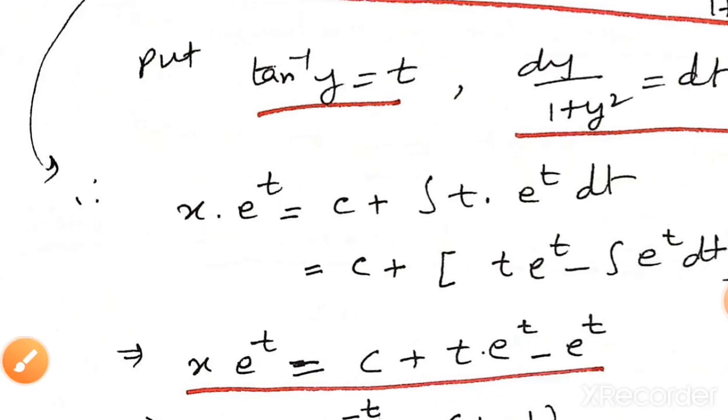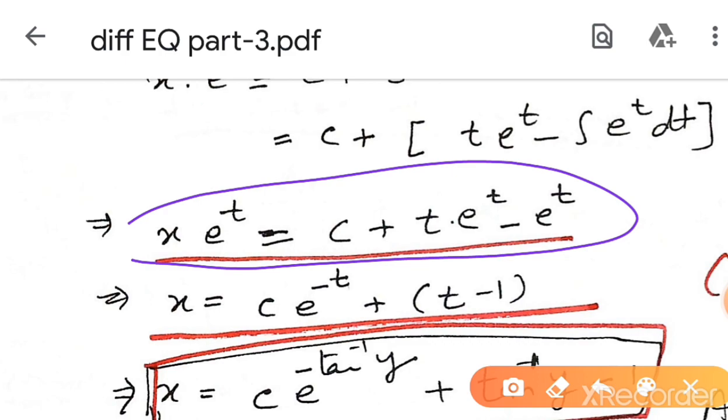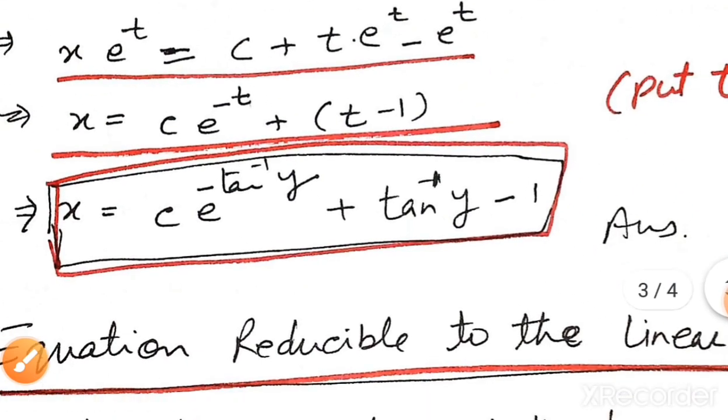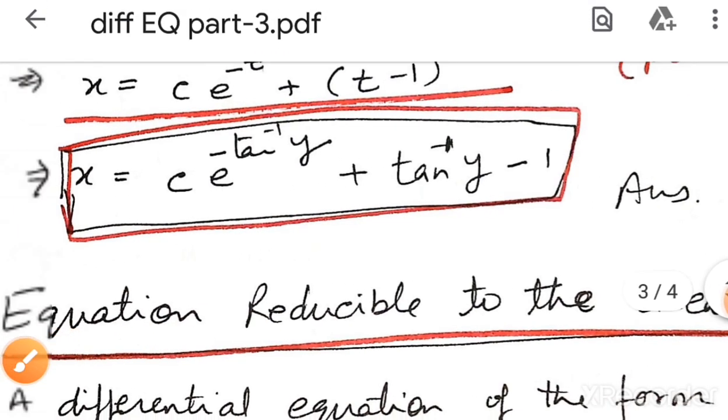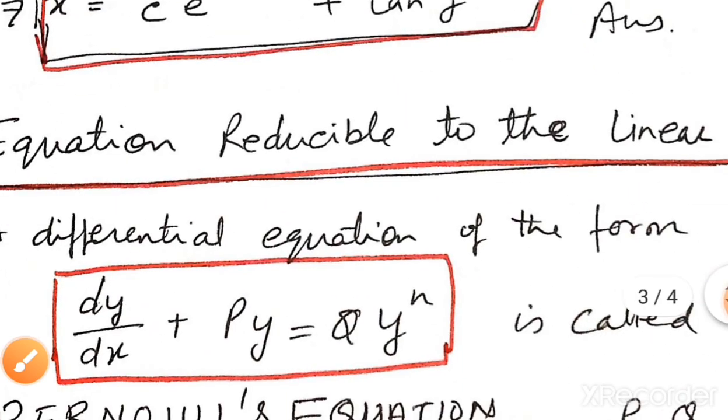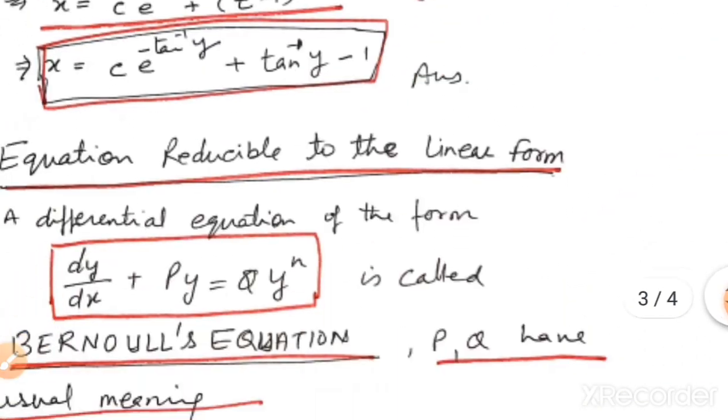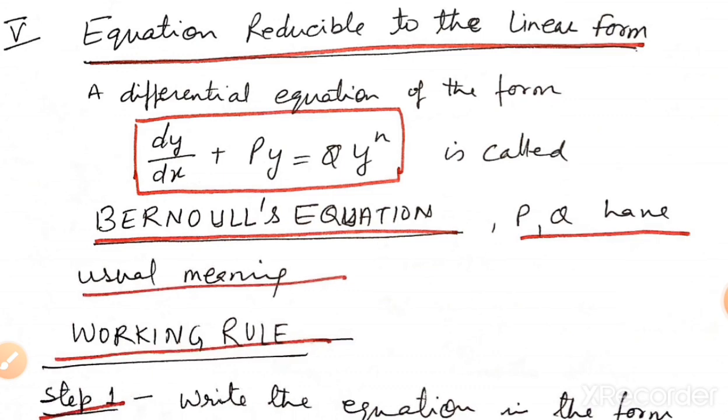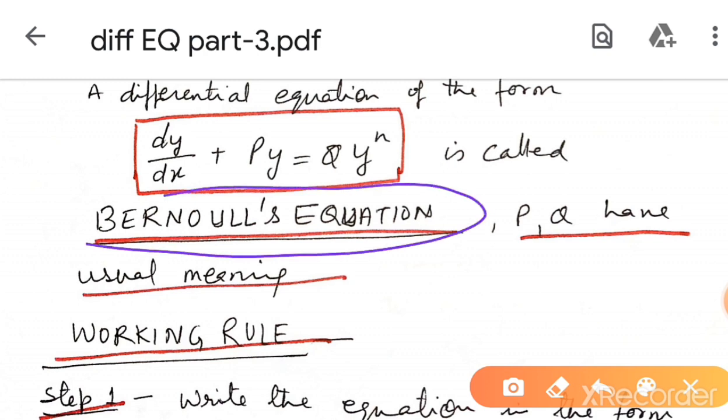For integration, substitute tan inverse y equal to t, so dy over 1 plus y square equal to dt. Substitute this value and solve for x. Replace t with tan inverse y to get the final solution.